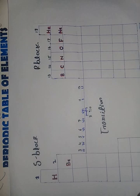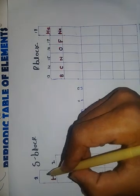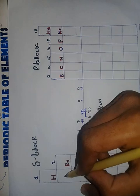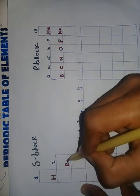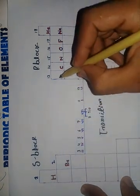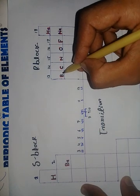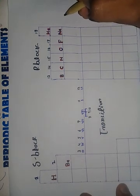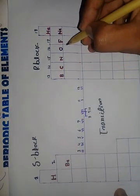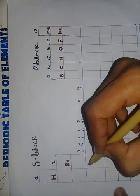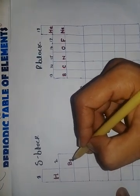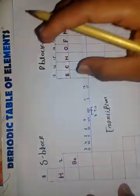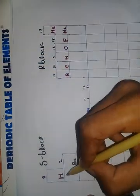In a periodic table, the atomic number increases. There is Helium – two, Lithium – three, Beryllium – four, Boron – five, and so on. There is an increase in atomic number going across. Vertically, the chemical properties are similar, similar to hydrogen, which is an exception.